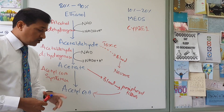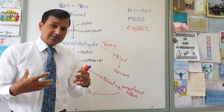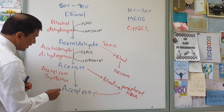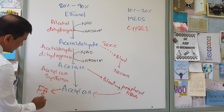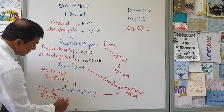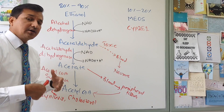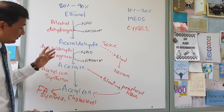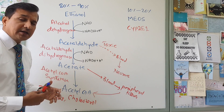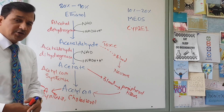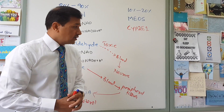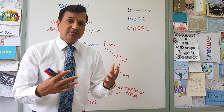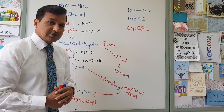This acetyl-CoA in peripheral tissues and in the liver can be used for energy — it can go into the TCA cycle. If the tissue does not need energy, acetyl-CoA can go into fatty acid synthesis and also into cholesterol synthesis. That is why, in a chronic alcoholic, the buildup of acetyl-CoA going into fatty acid synthesis can give rise to fatty liver disorder or hepatic steatosis. Cholesterol levels will also increase because acetyl-CoA can be converted to cholesterol.